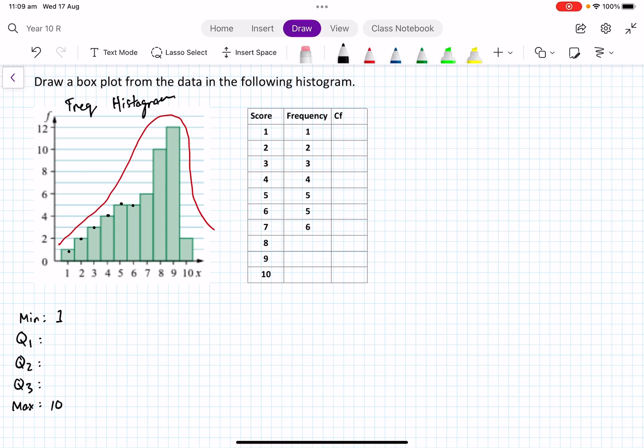How many eights are there? Well, this frequency is 10, so we've got that. Then nine has a frequency of 12, and then 10 drops back down to two.